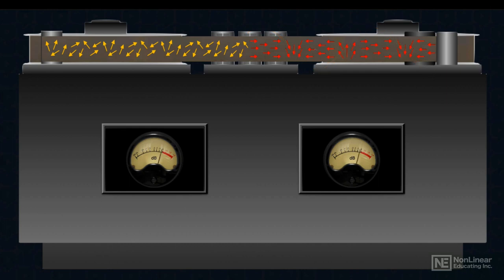The magnetic particles consist of domains. On a blank tape, these are randomly oriented. But as the tape is magnetized by the record head, they're reoriented to follow the polarity swings of the incoming magnetic flux, the incoming audio signal.